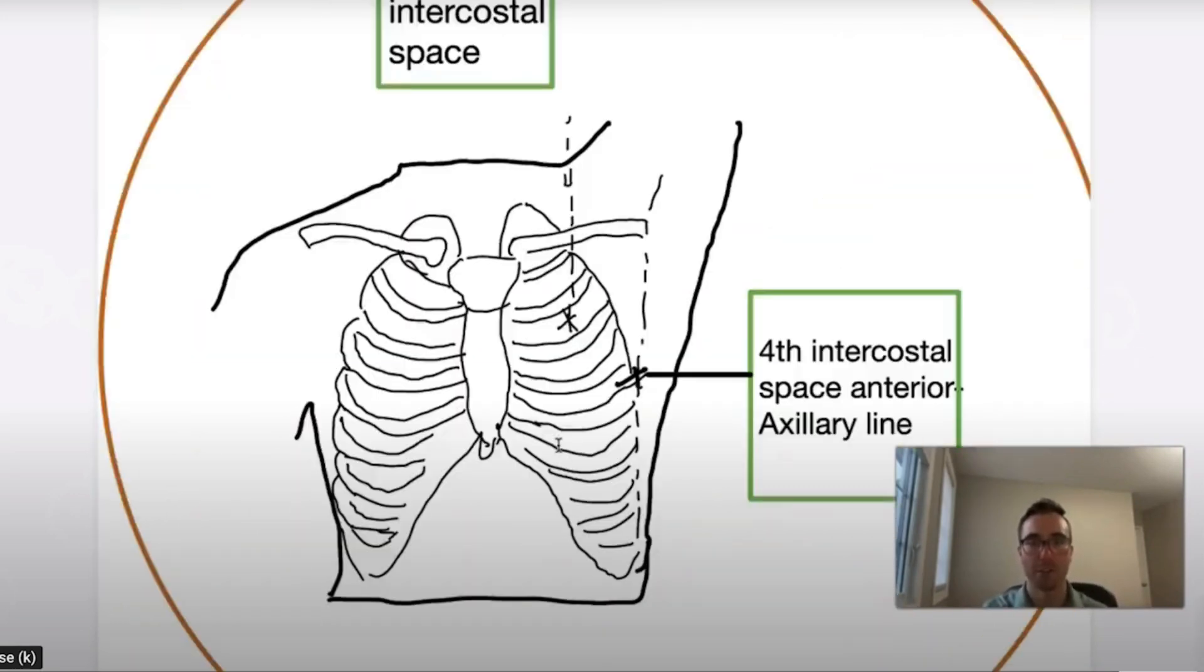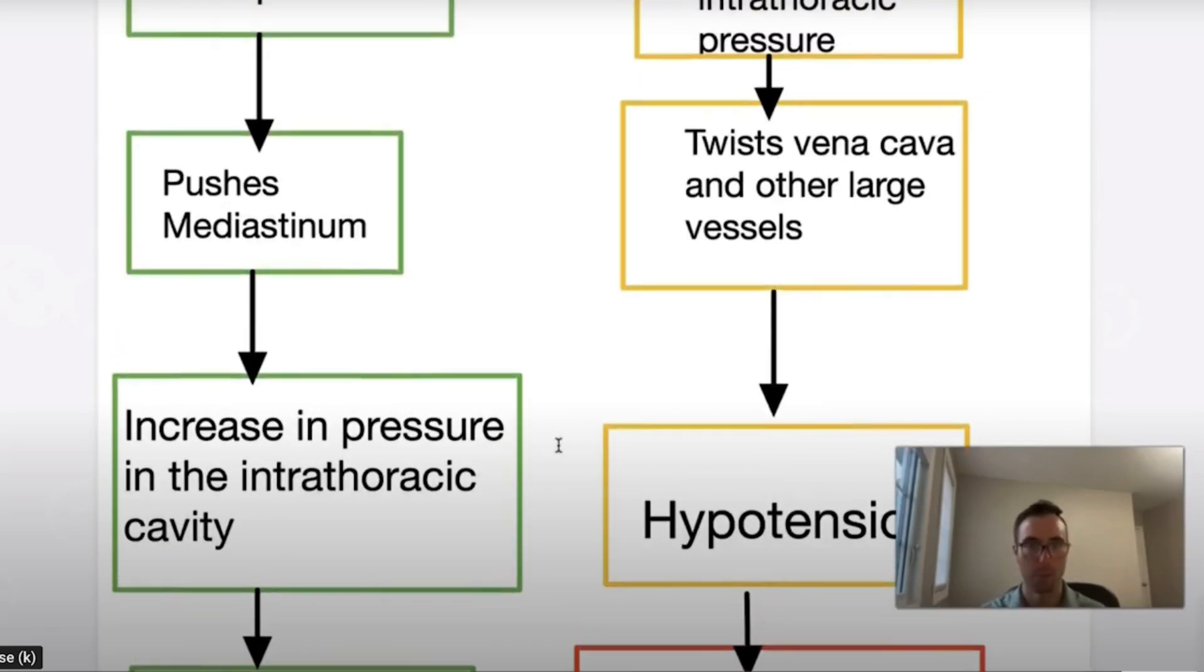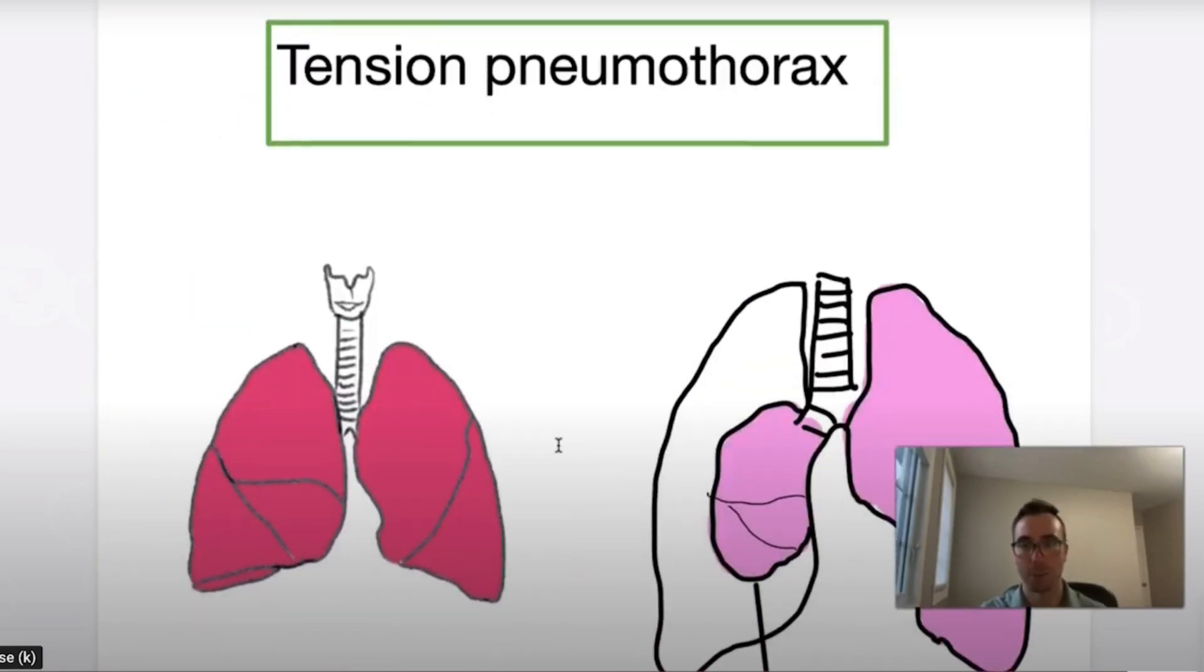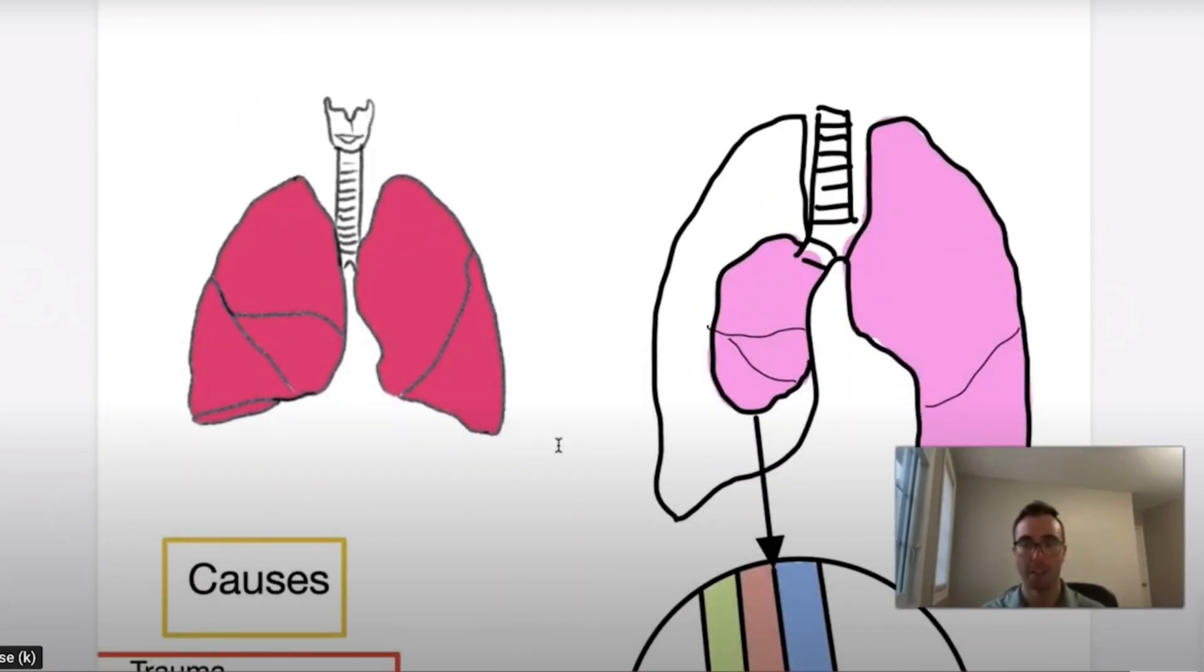So overall, this video is to review tension pneumothorax, how we treat it, the pathophysiology, the clinical manifestations, some differentials. And the last kind of point is, what if someone has a diaphragmatic herniation?